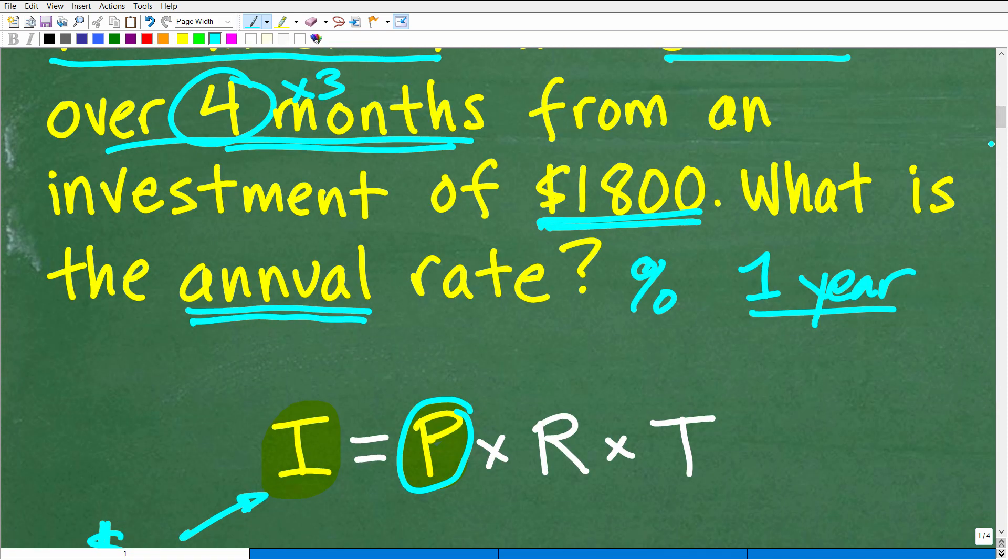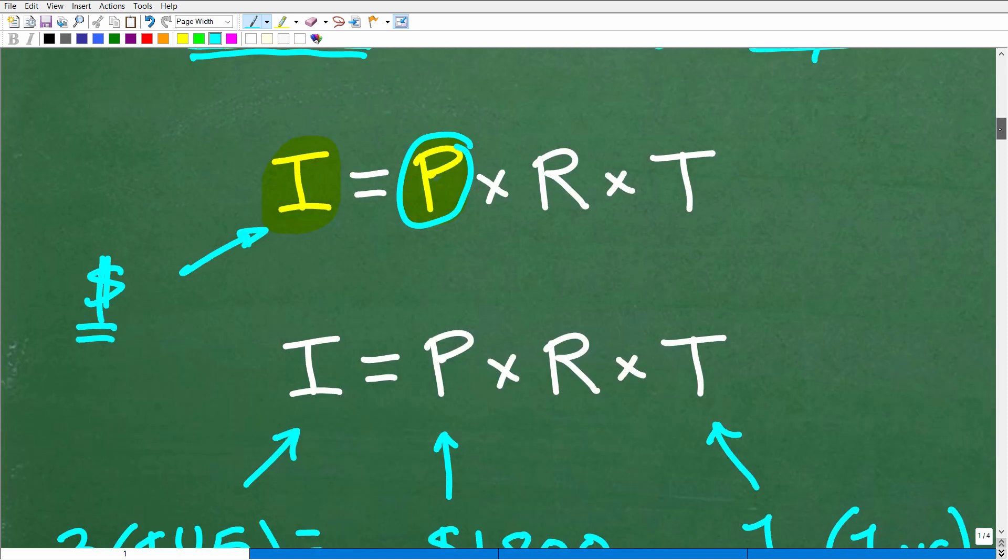Now, in this case, that would be $1,800, right? So this is what we're starting off with. The R is what we're actually looking for.